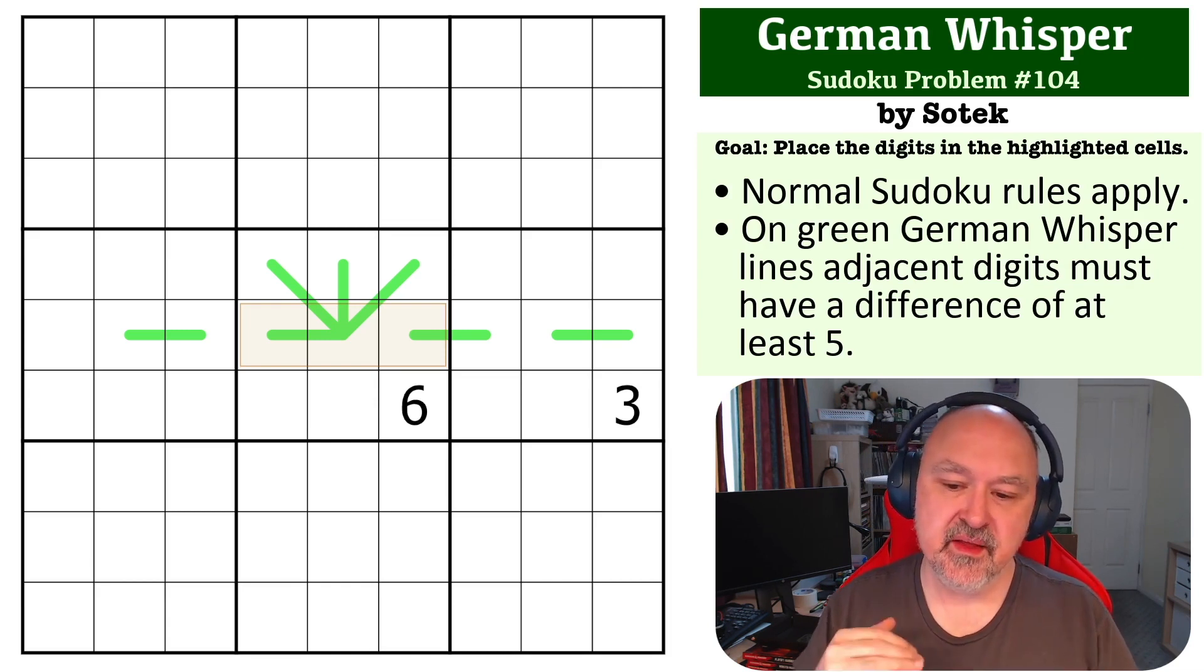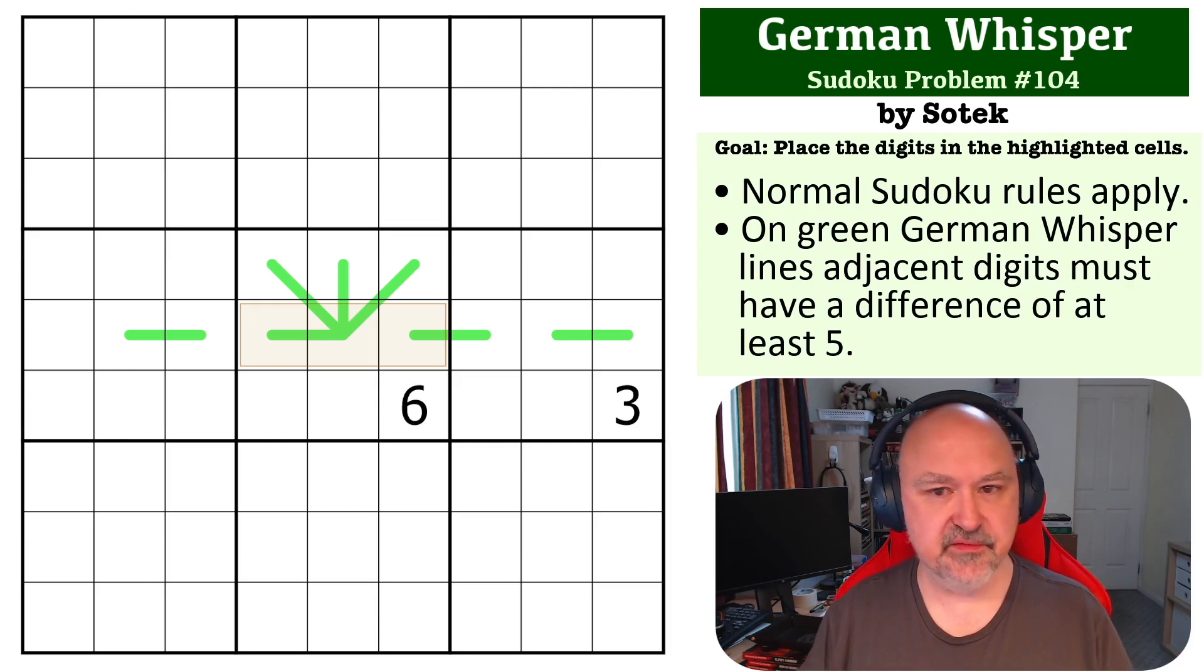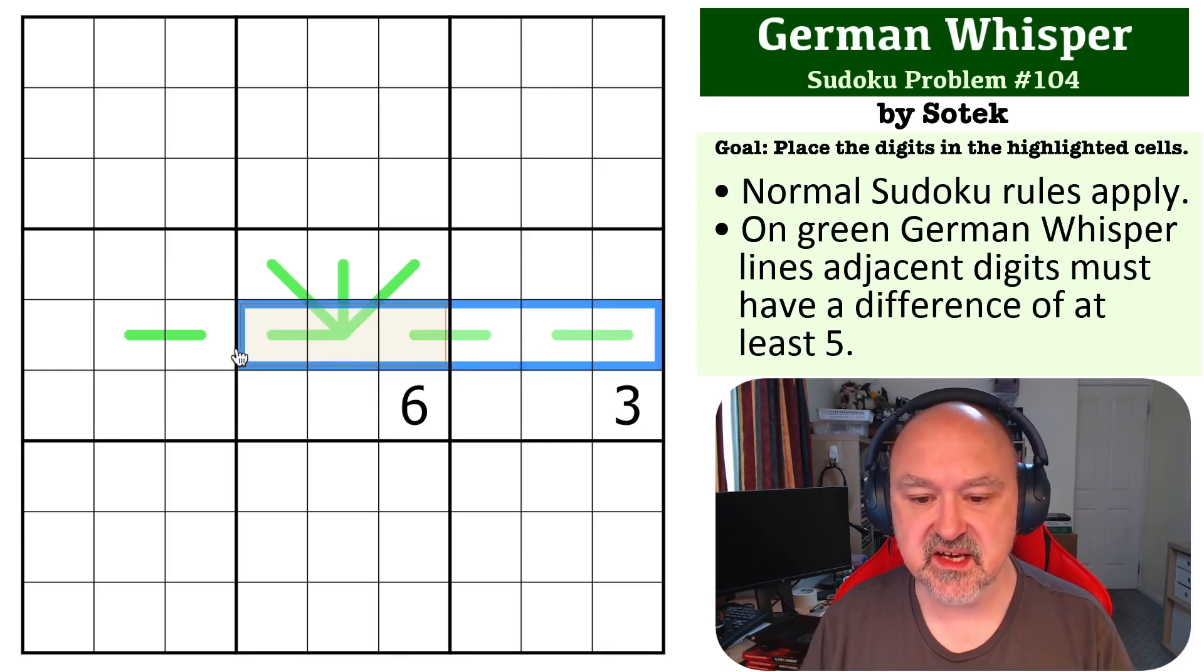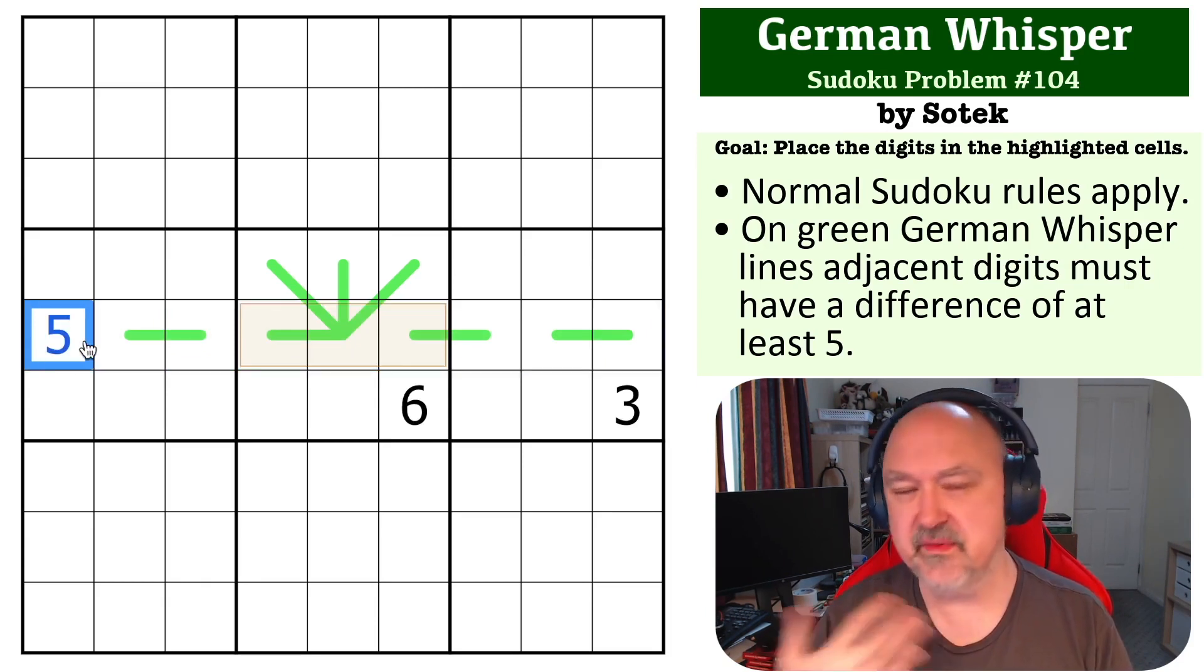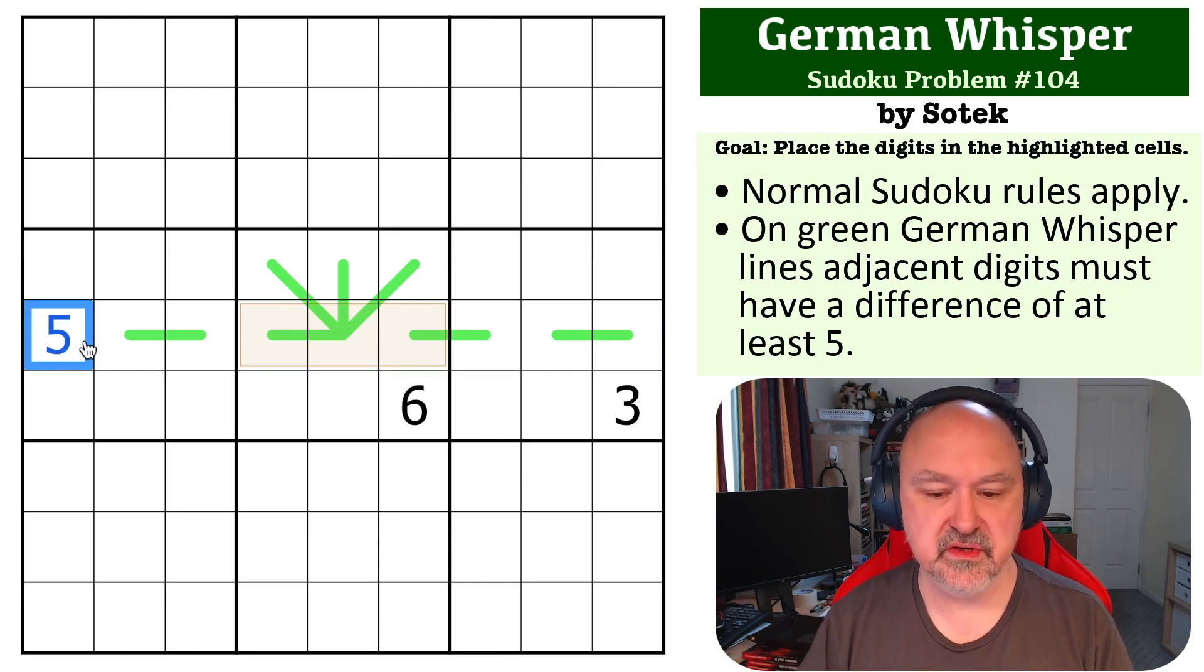Okay, so this one, there's a couple of different ways of looking at this. The first thing you can see is because you can never put a five on a German whisper line because five lower than five is zero or lower, five higher is ten or higher, this becomes a five. But that's not relevant to the solve.